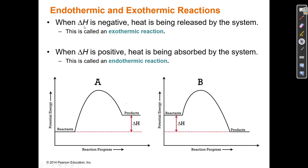When delta H is negative, that means heat has been released—we call that an exothermic reaction. When delta H is positive, or Q is positive, heat is being absorbed—that's an endothermic reaction. So when delta H is negative, heat is released and the surroundings heat up. When delta H is positive, heat is being absorbed by the system and the surroundings get cold.